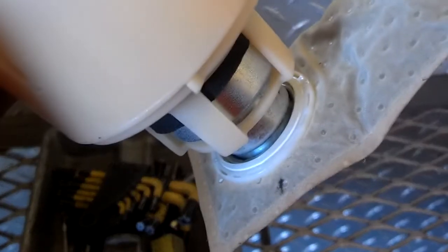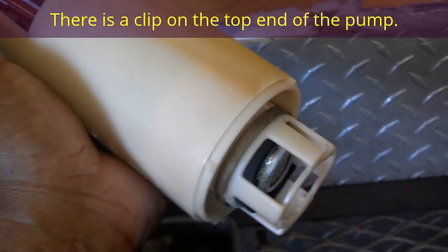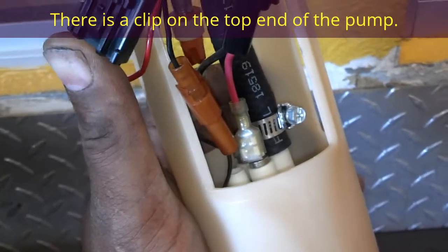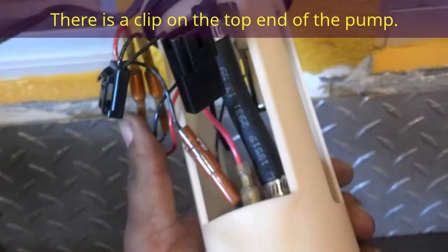Next thing I'm gonna do is pry this fuel sock off of the bottom of it. Next, I'm pushing the pump up through the bottom of the sending unit and I'm gonna try to slide it out this side of the pump house.